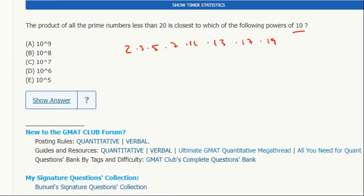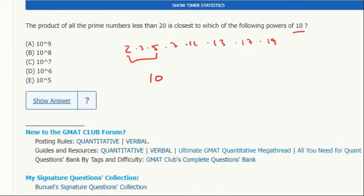I want to relate them to powers of 10. So 2 and 5 together, that's a 10. So those are out.